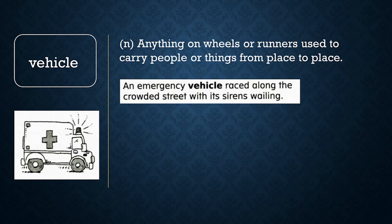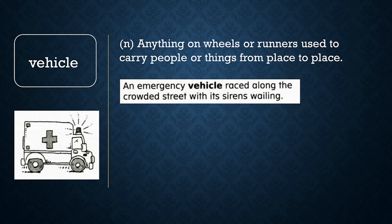Vehicle. Say, vehicle. A vehicle is anything on wheels or runners used to carry people or things from place to place. An emergency vehicle raced along the crowded street with its sirens wailing. Now let's review word meaning. Choose A or B: which of these is a vehicle — A, a bike, or B, a horse? If you said A, you are right. A bike has wheels and can carry you from place to place.